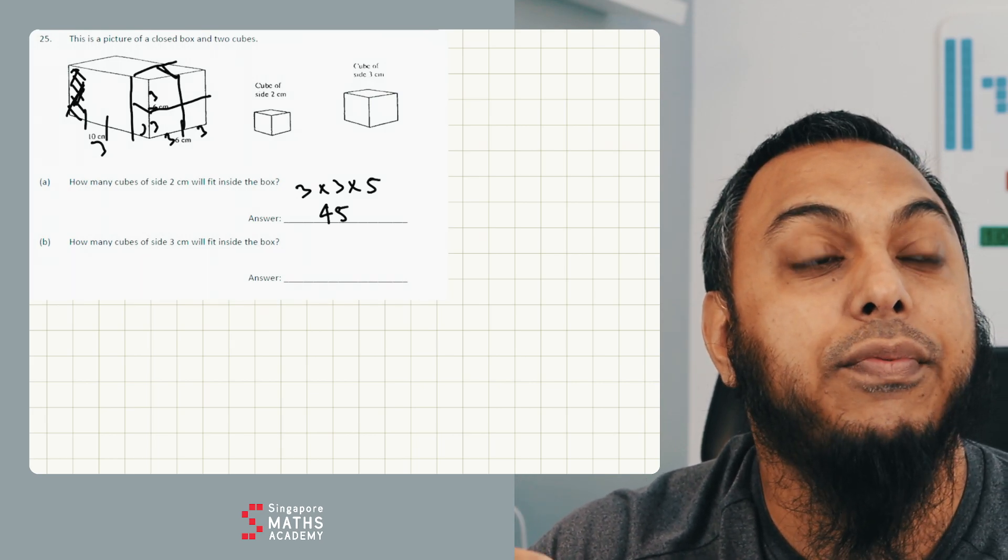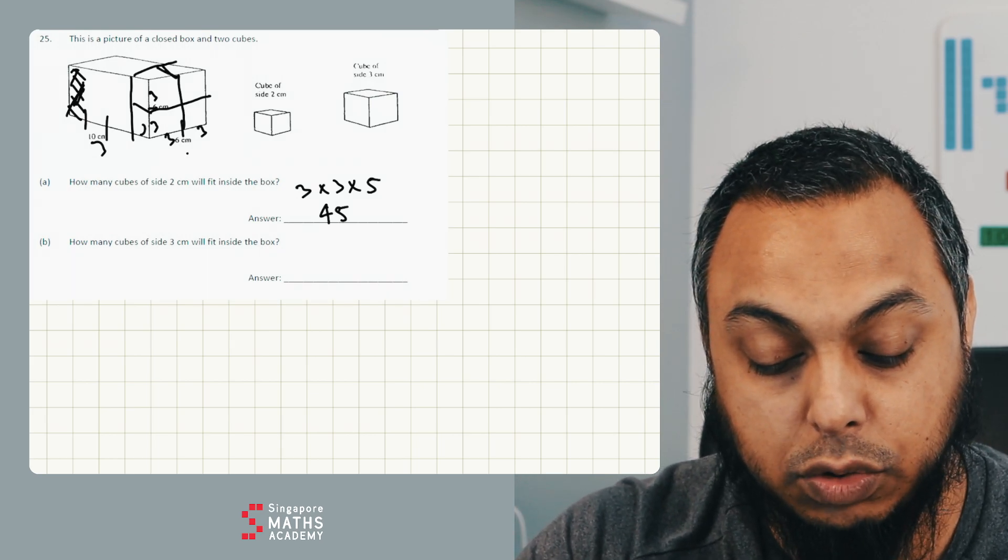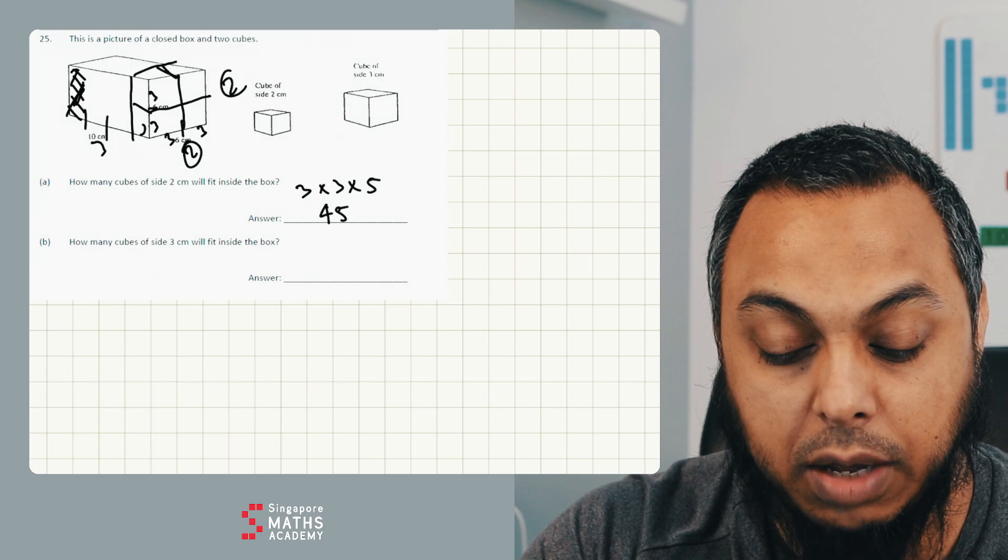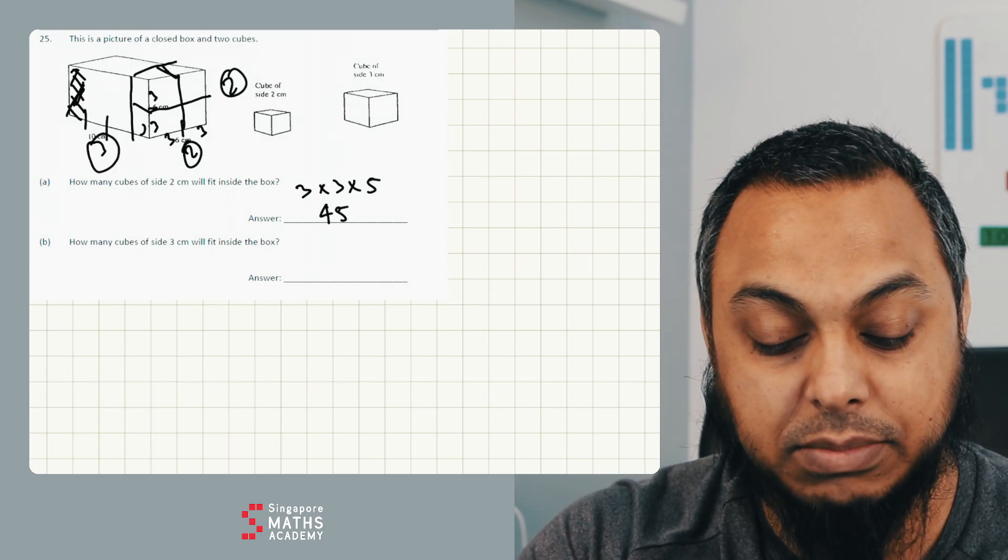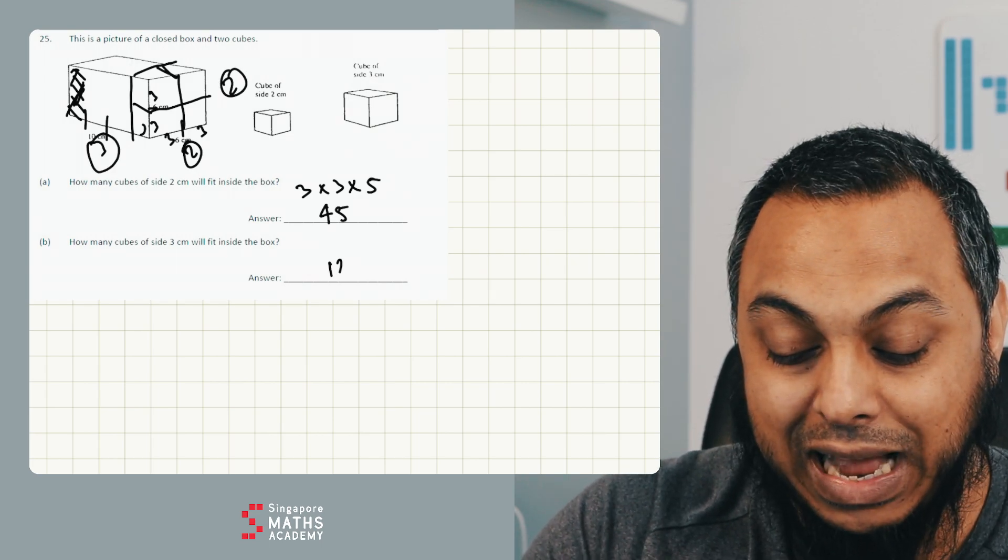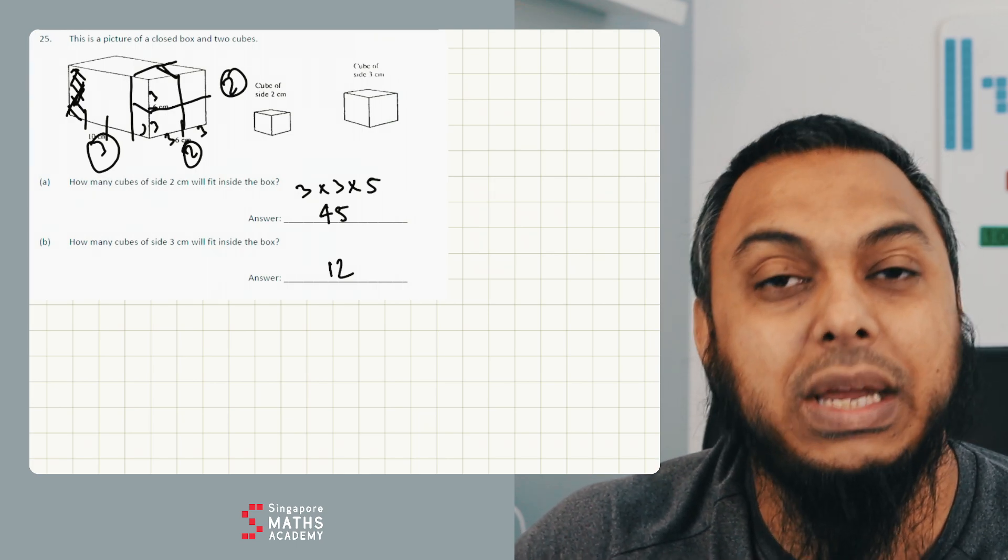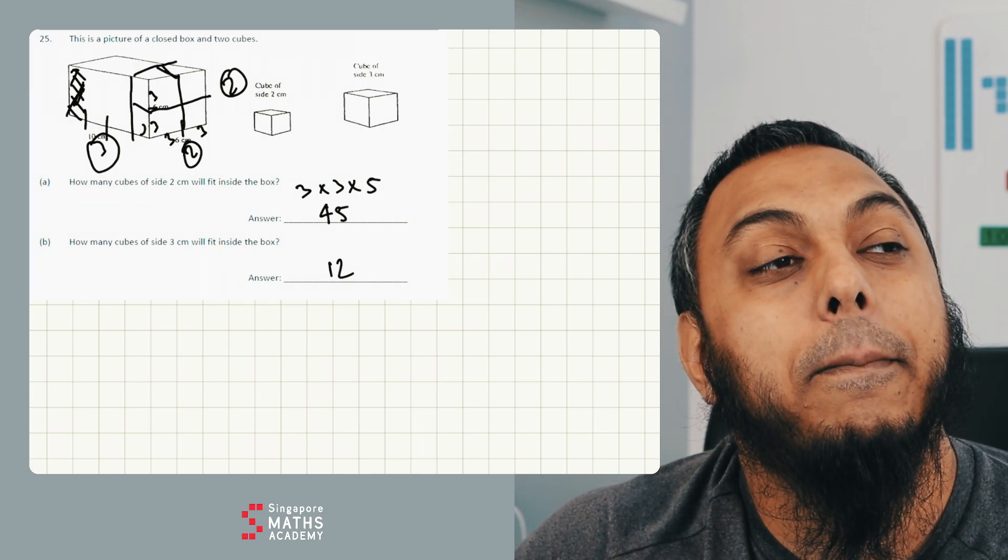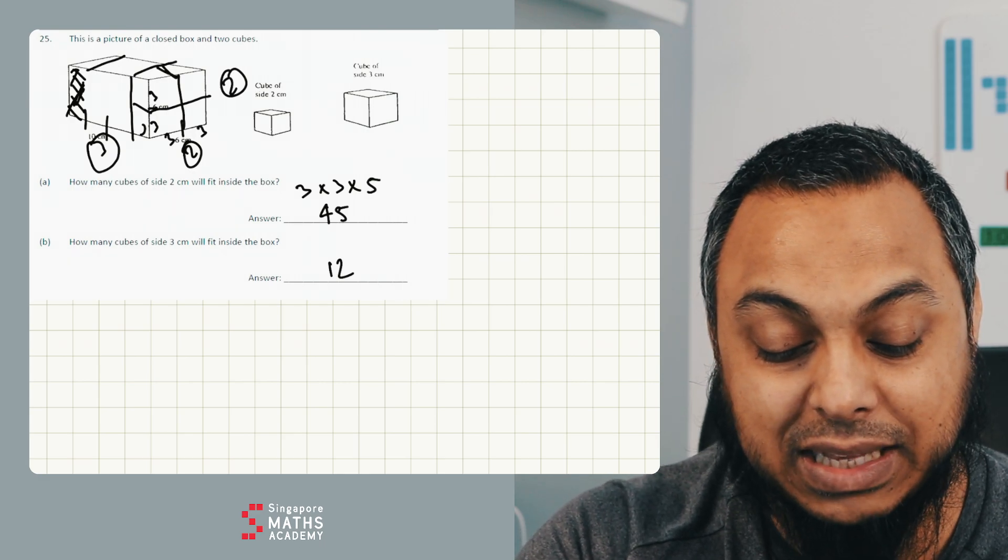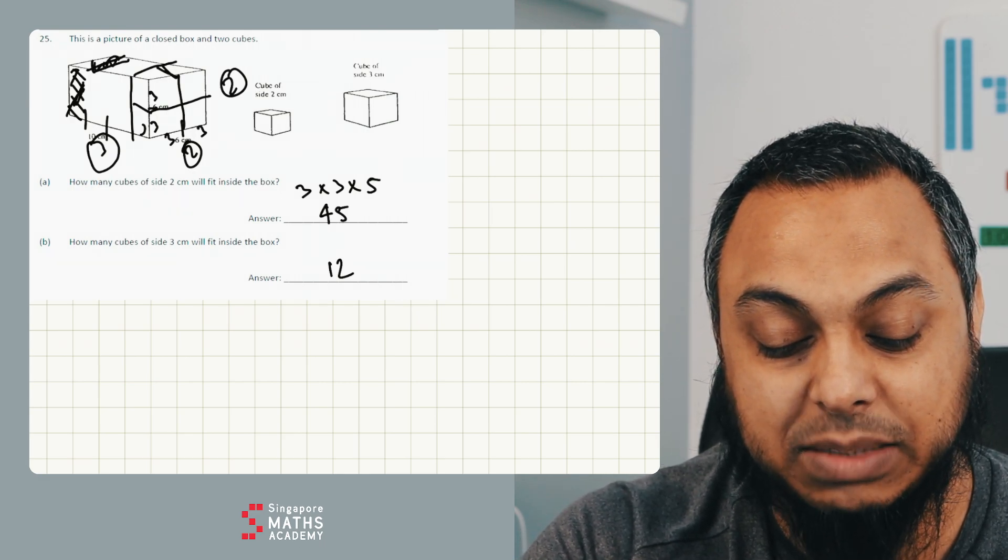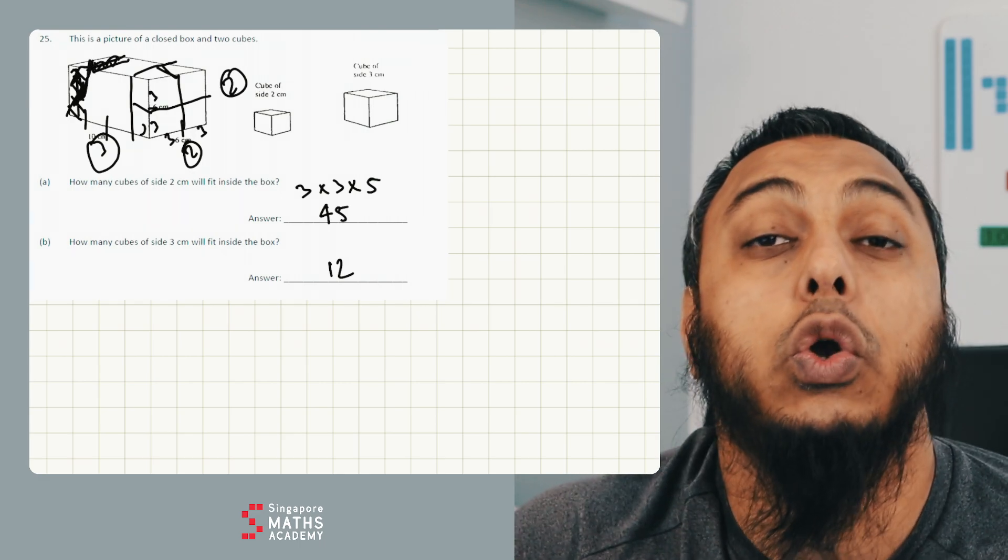And so three by four, two times two, two going up, two times two is four times three. Four times three is 12. I can have 12 cubes which are three by three by three centimetres across. But there will be some space at the end that's around one centimetre space at the end which is not going to be filled.